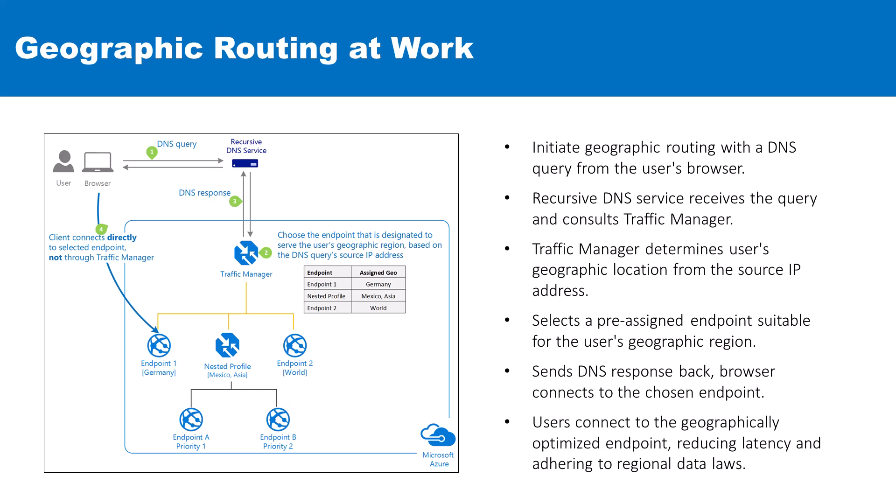However, if the user's geographic location corresponds to areas like Mexico or Asia, the Traffic Manager might select a nested profile specifically set up to serve those regions. And for all the other locations around the world, endpoint 2 with a global assignment would be chosen.